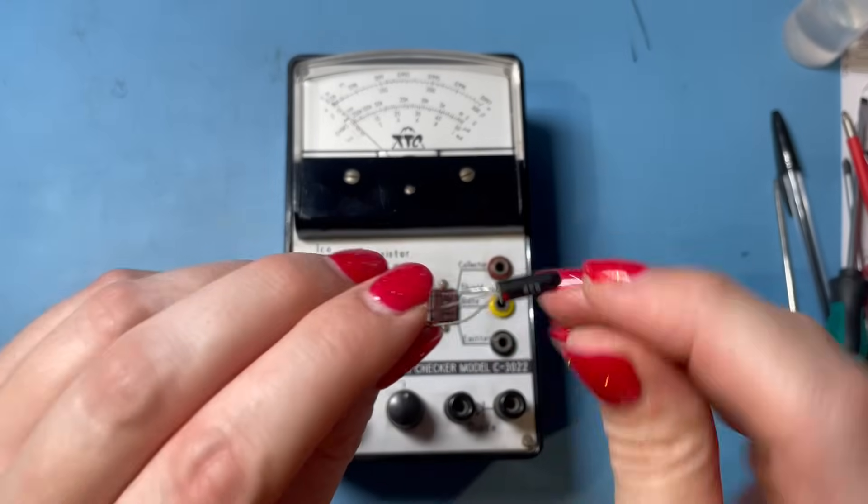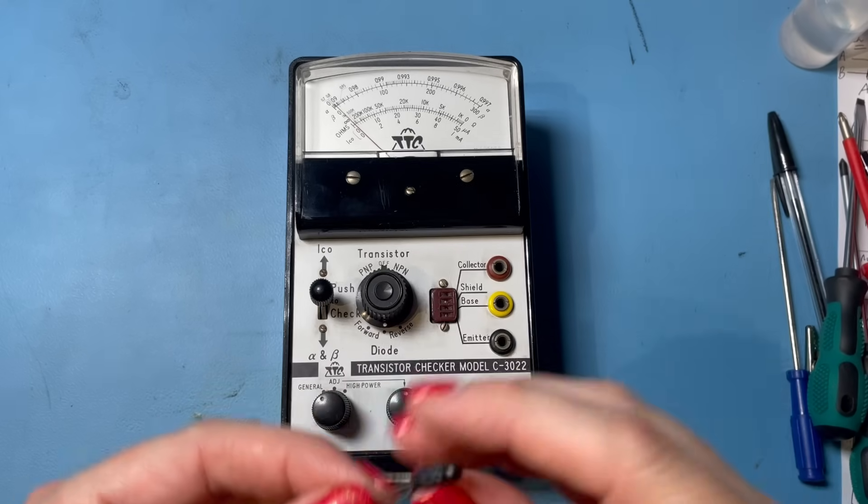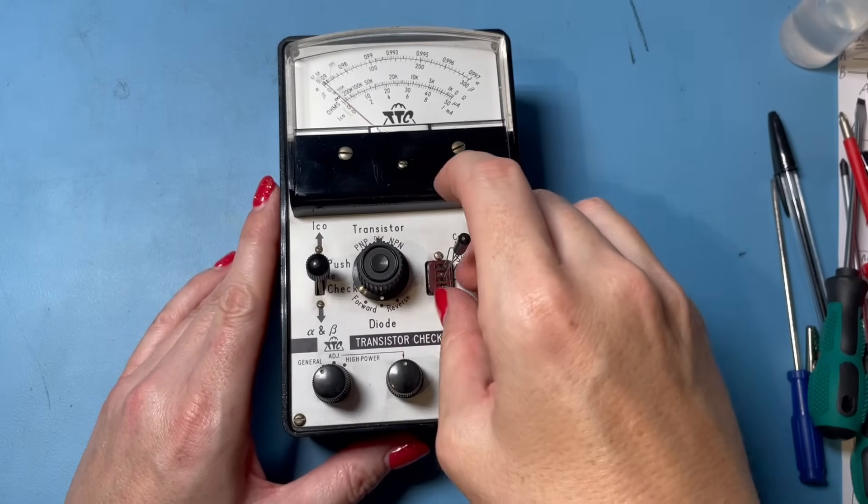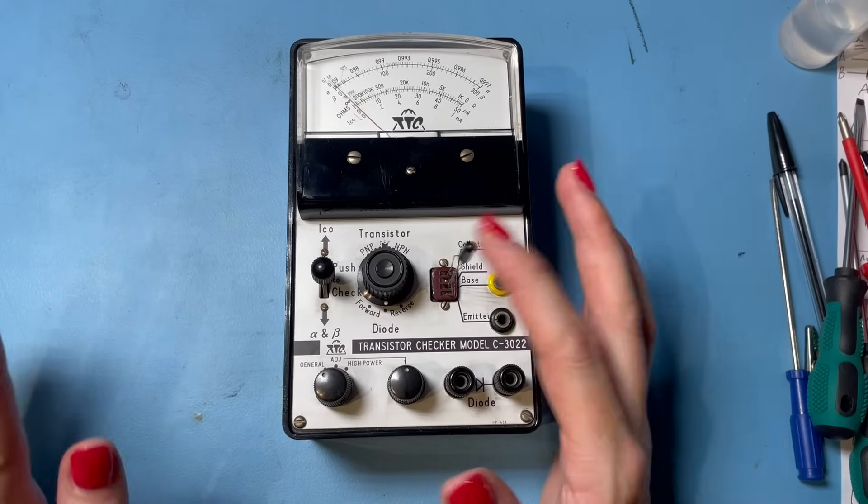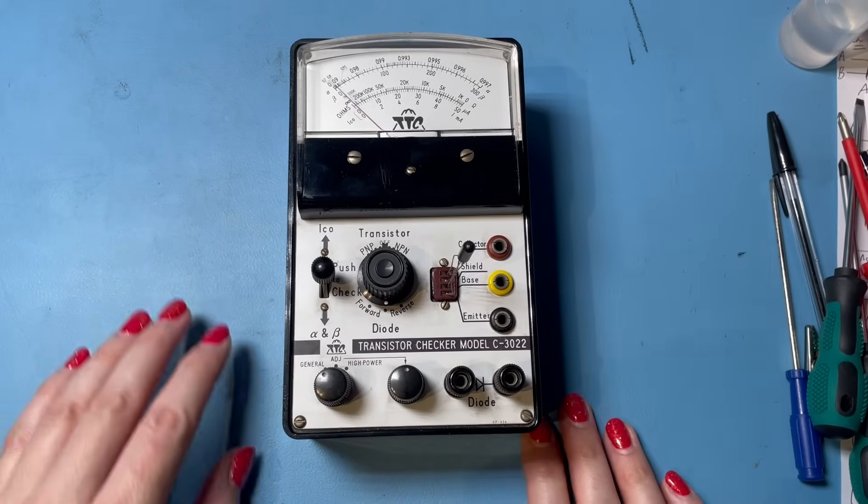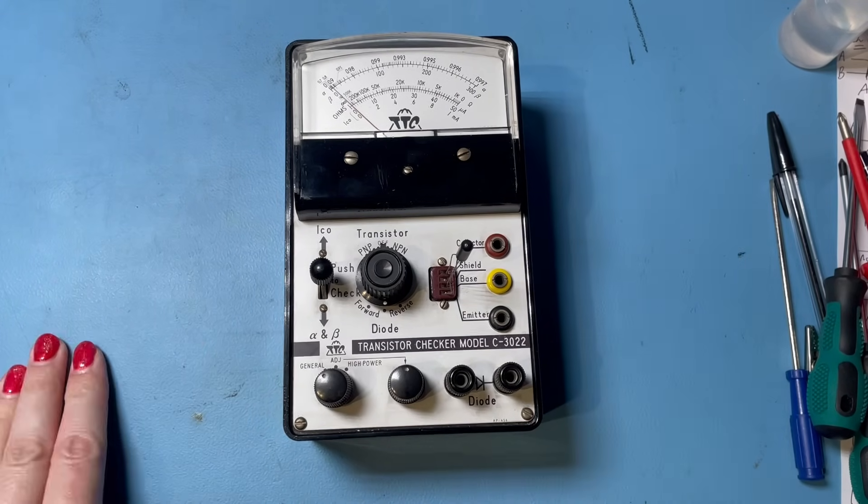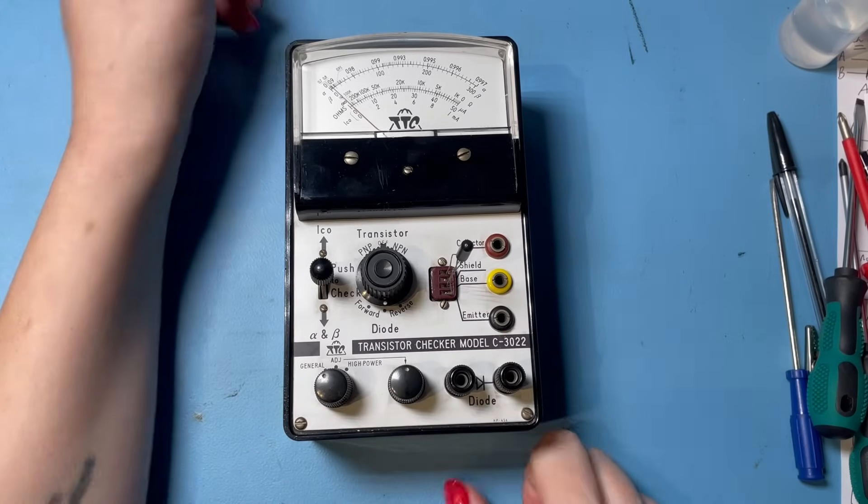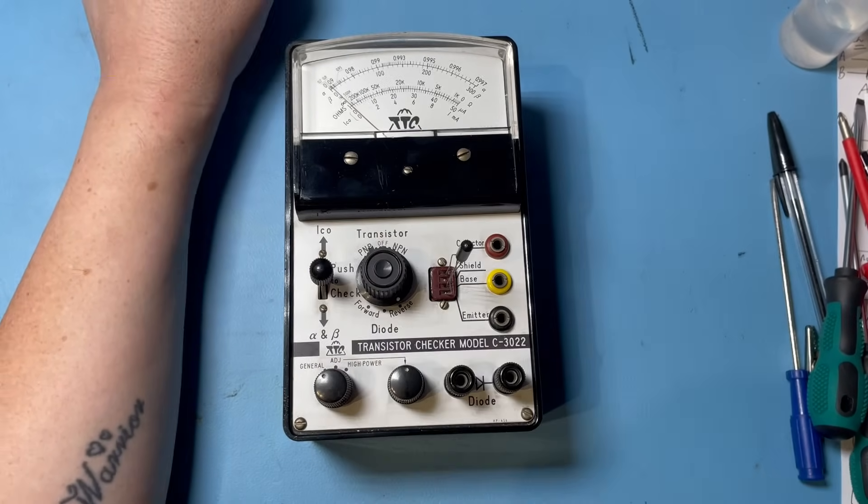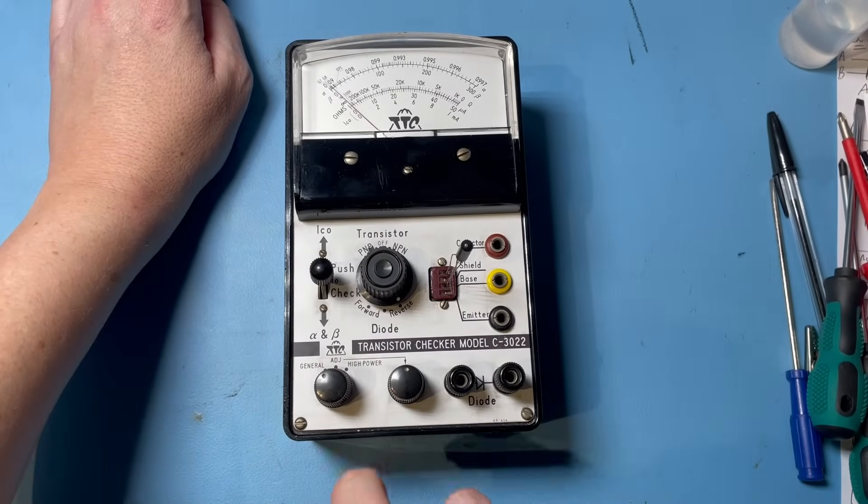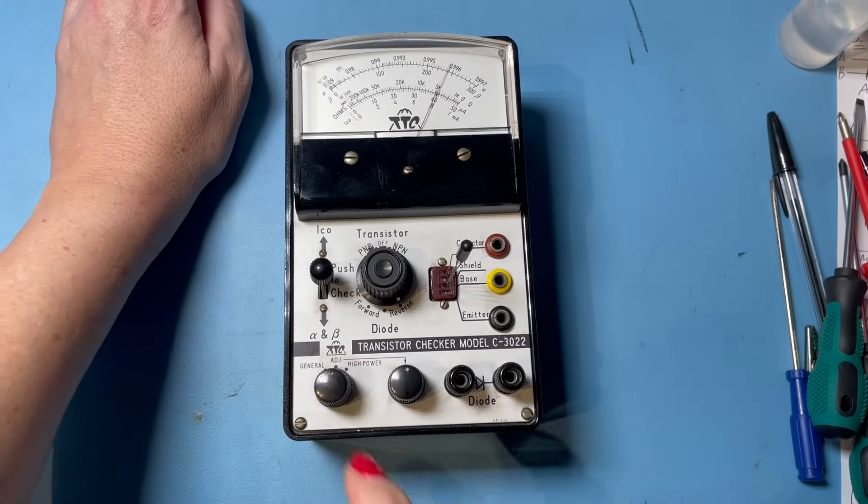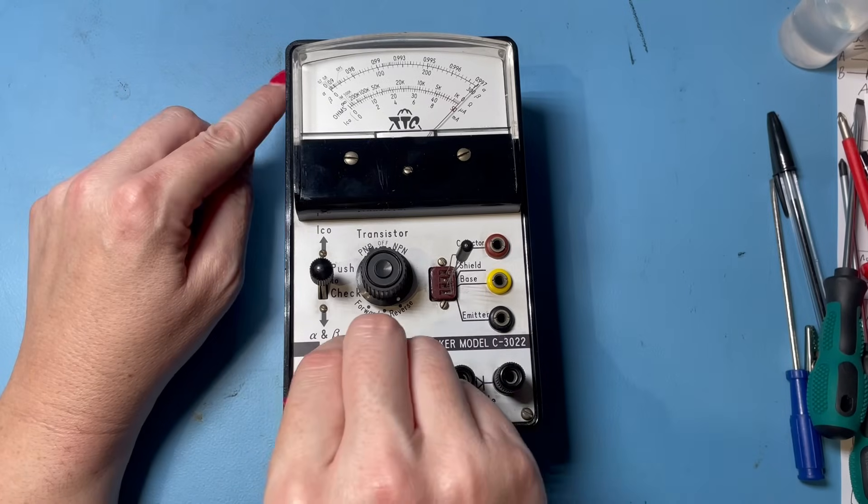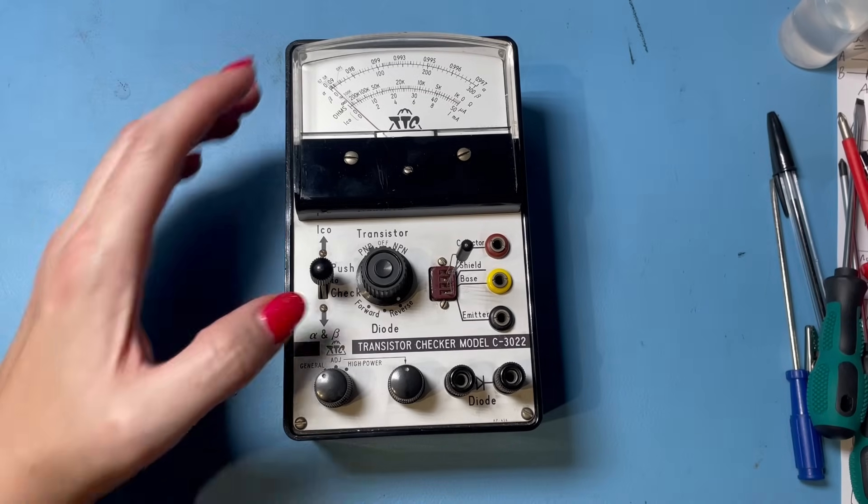So we can tell with this that the collector is here because we've got a red dot. So collector wants to be at the top. Right, there we go. A little bit fiddly getting that in there. So germanium transistor, pretty old. So are we going to see any leakage on this? So this is an OC71 PNP germanium transistor. So we turn it to PNP. Now let's go to adjust. We've got to make sure that's sitting at 300, which it is. That's excellent. OK, so then we go back to general because it's a general purpose transistor.